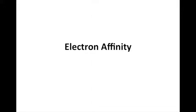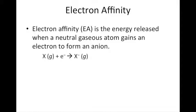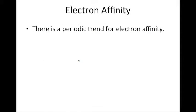In this video we want to continue our discussion of electron affinities by looking at some exceptions to the electron affinity periodic trends. Electron affinity is defined as the energy that is released when a neutral gaseous atom gains an electron in order to form an anion. And there are some important periodic trends related to electron affinity.